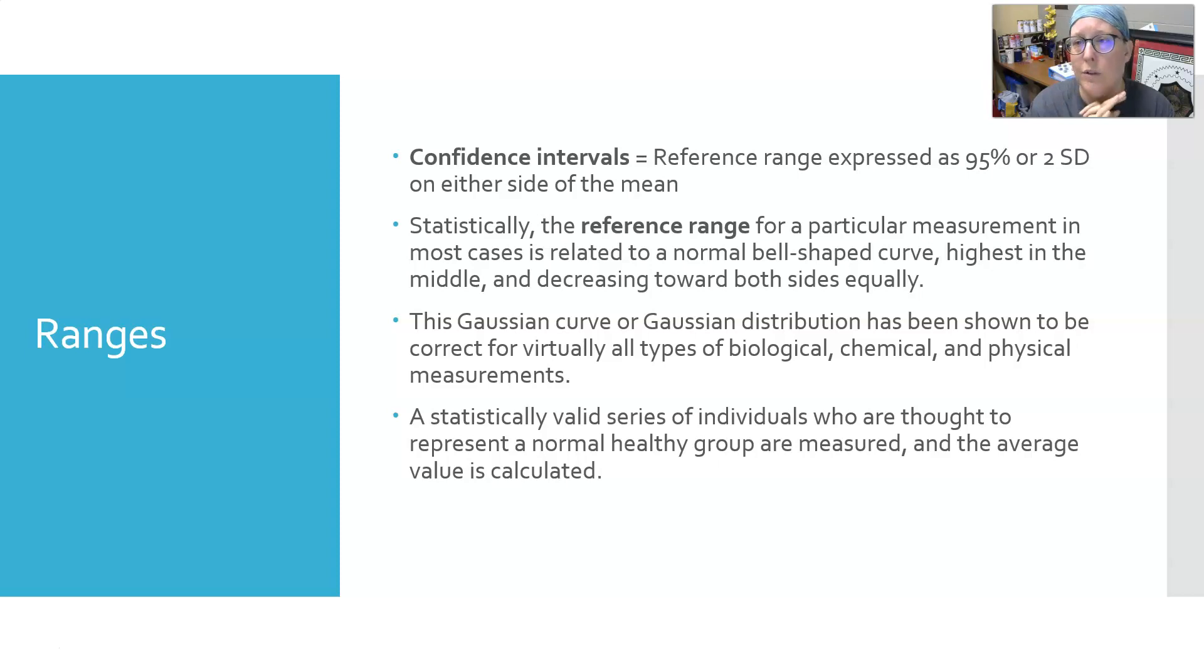For establishing a reference range for a new test, it will take at a bare minimum at least 700 healthy individuals. Run the test on them to get what on average a healthy person will be, then calculate within that data what two standard deviations above and below the mean are - that would be your reference range.